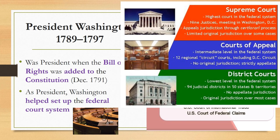How does a case get from a local level to a Supreme Court decision? The District Courts are the lowest level in the federal system — 94 judicial districts in the 50 states and territories, with original jurisdiction over most cases. If a case is important, it moves up to the second tier: the Courts of Appeal, the intermediate level in the federal court system, with 12 regional circuit courts including the DC Circuit. There is no original jurisdiction — it is strictly appellate.